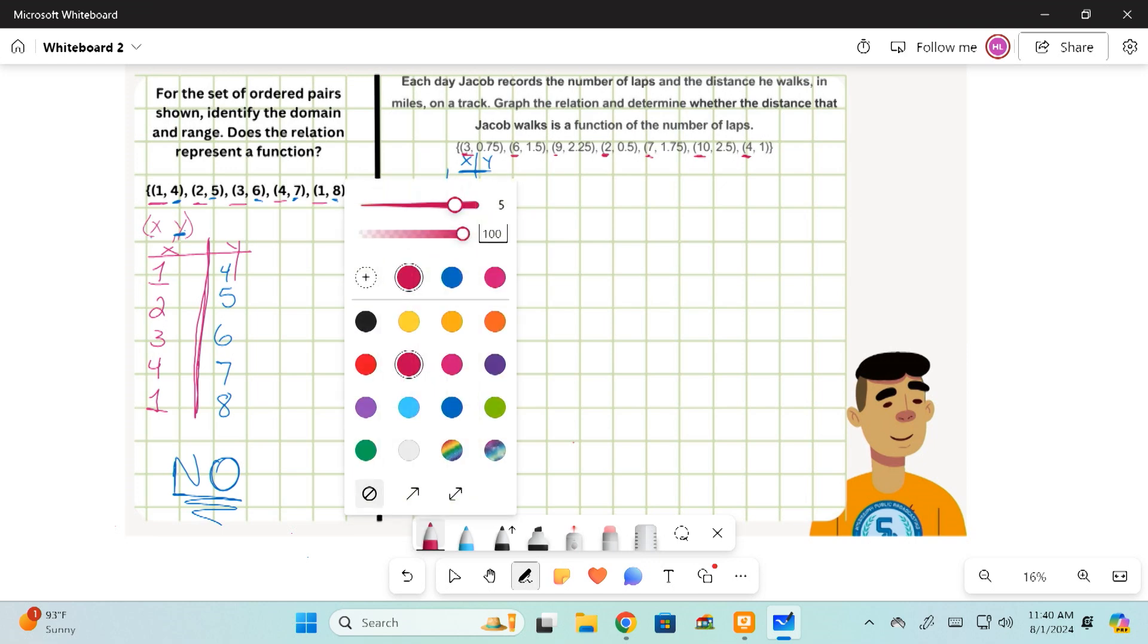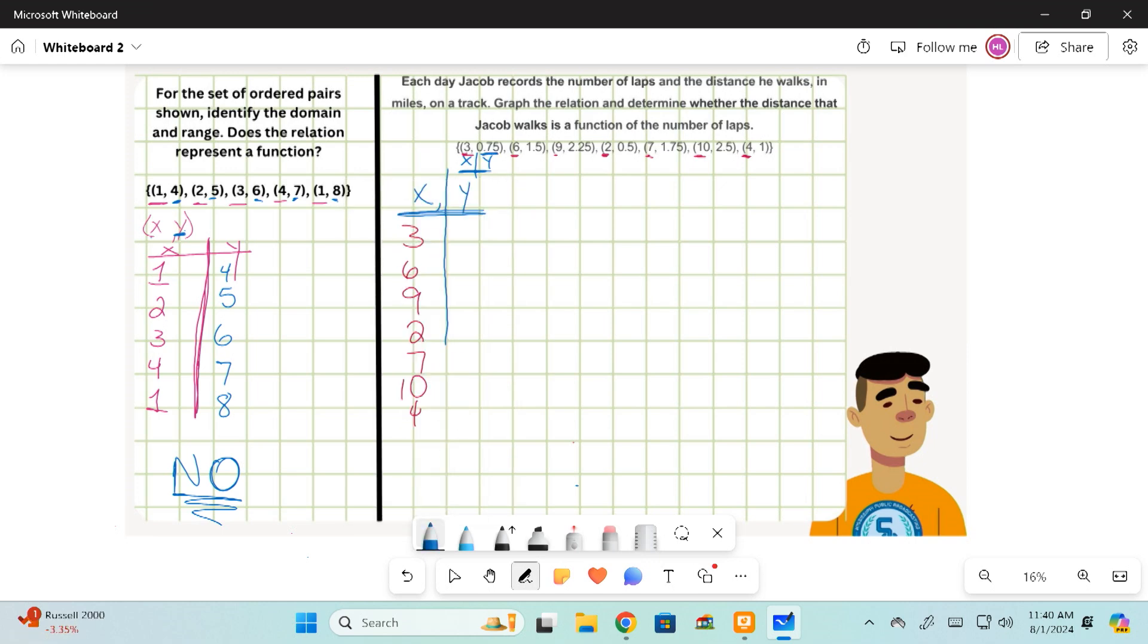My y's are 0.75, 1.5, 2.25, 0.5, 1.75, 2.5, and 1. 0.75, 1.5, 2.25, 0.5, 1.75, 2.5, and then also one.